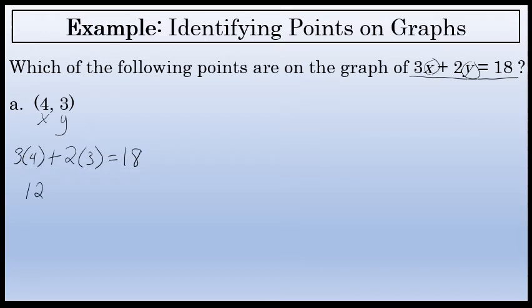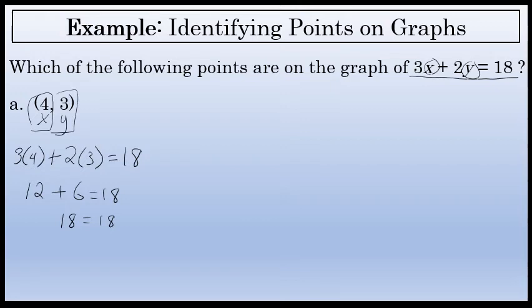3 times 4 is 12, and 2 times 3 is 6. That sum is 18. Substituting a 4 for x and a 3 for y does result in a true statement. So to answer the question: is (4, 3) a point on the graph of 3x plus 2y equals 18? The answer is yes — it is a point on the graph. If we were to draw a graph of 3x plus 2y equals 18, (4, 3) would be one of the infinite number of points on that graph.